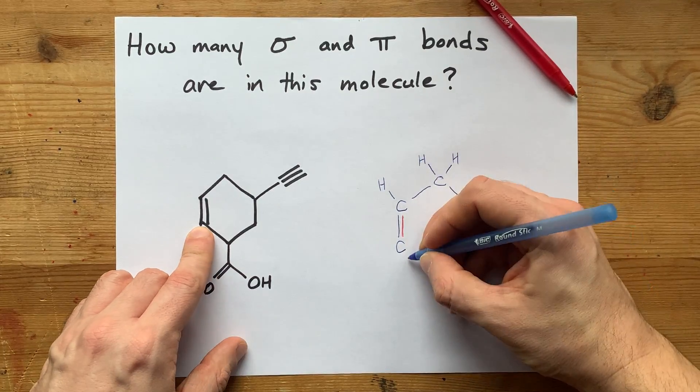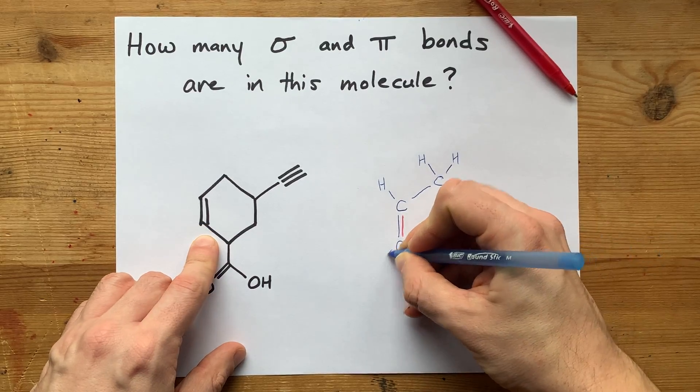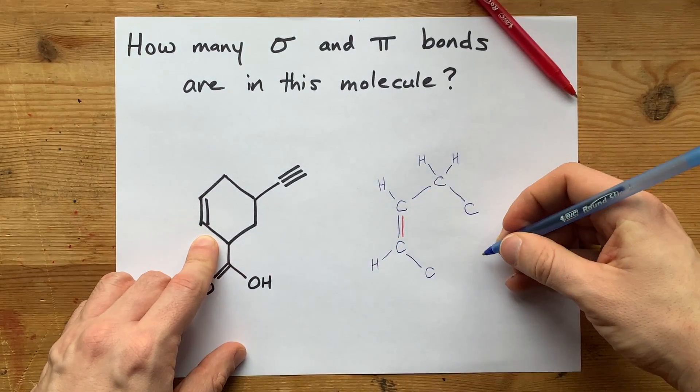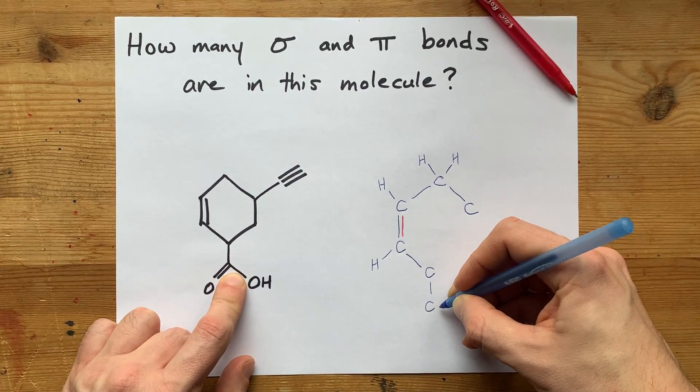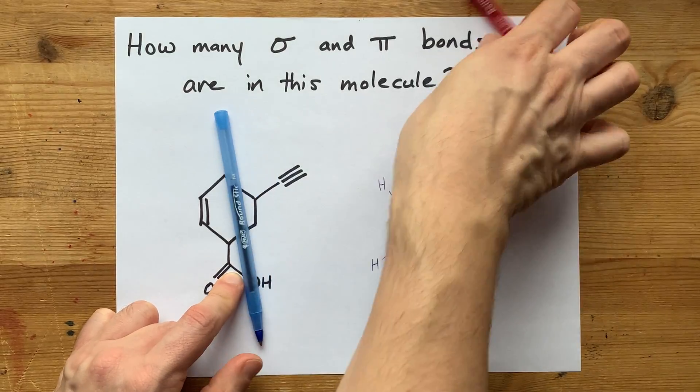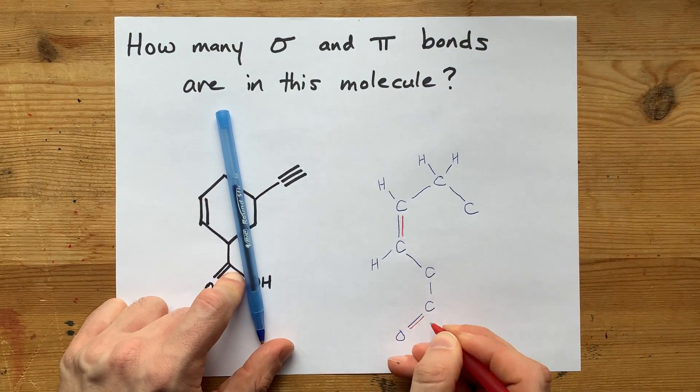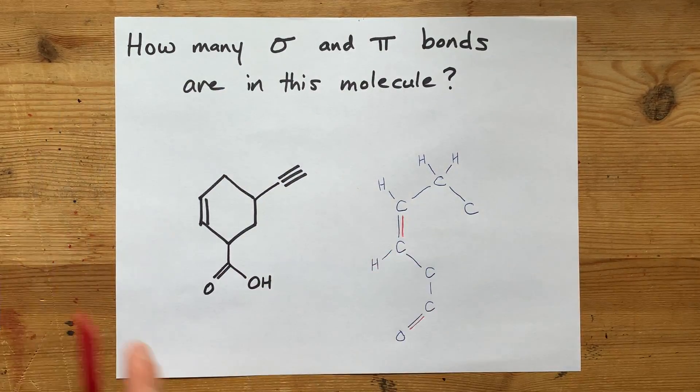This carbon is single bonded to that carbon, and again, a bond to hydrogen wasn't shown. That carbon is single bonded to this carbon, which in turn was single bonded to the oxygen. Oh no, wait, double bonded. The second bond between the two is pi.